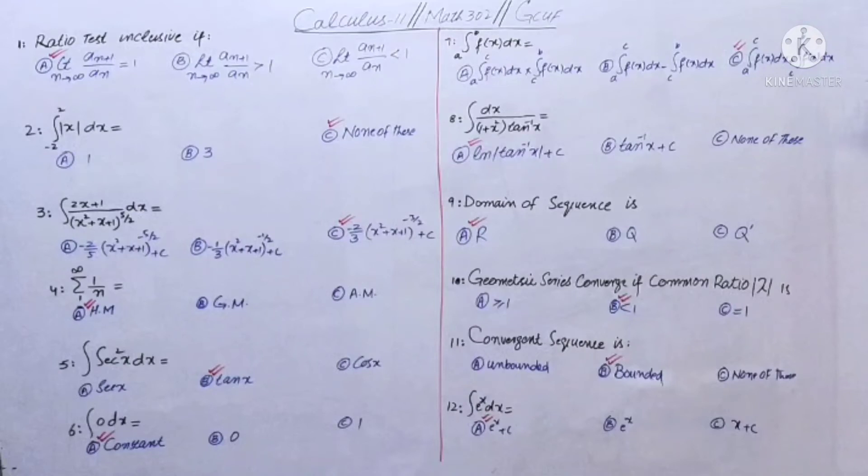When you have integral and then its function, then the power of function increases. So you have minus 5/2 plus 1, which is minus 3/2, in the denominator. So the right answer will be minus 2/3 (x²+x+1)^(-3/2) plus c. This is the right answer.